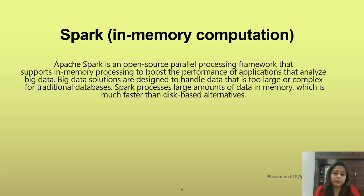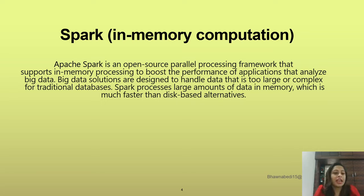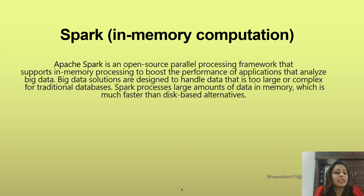So that is why we call it a parallel processing framework that supports in-memory processing to boost the performance of applications. Since it is in-memory computation, it is definitely much more effective than MapReduce, which was actually performed on hardware. It is definitely used to analyze big data. So: Apache Spark is an open source parallel processing framework that supports in-memory processing to boost the performance of applications that analyze big data.